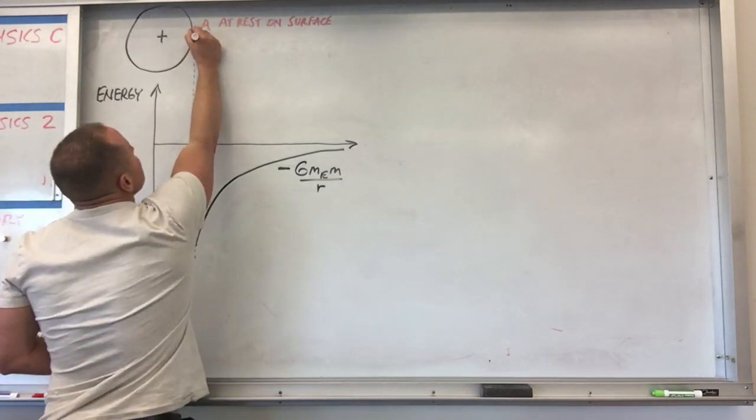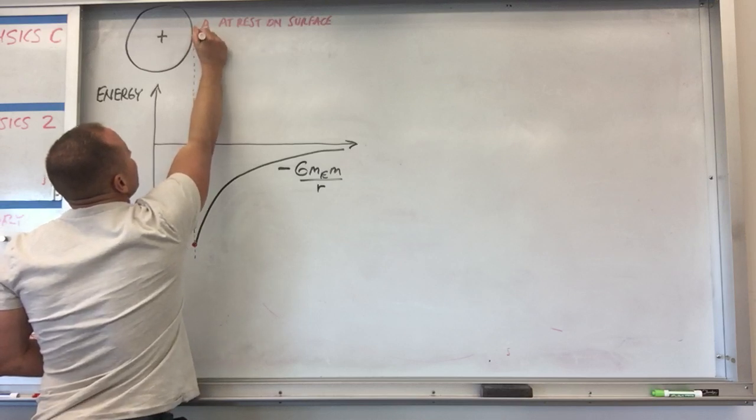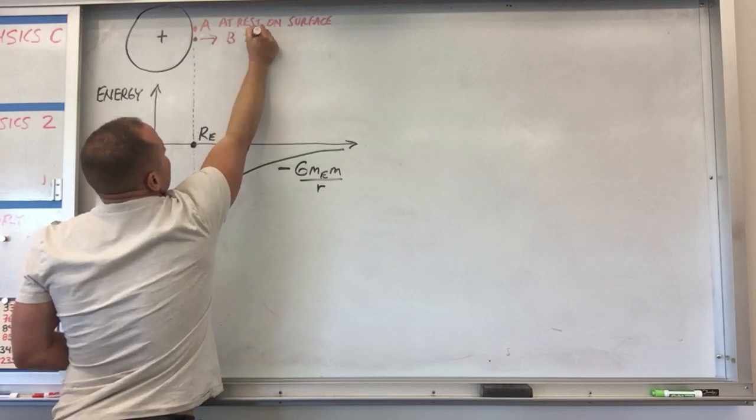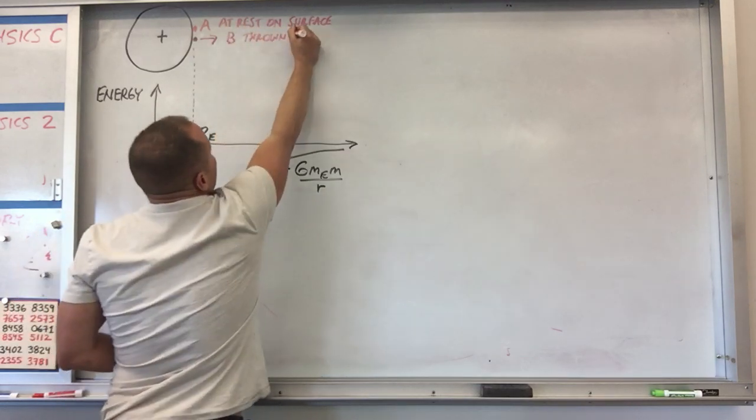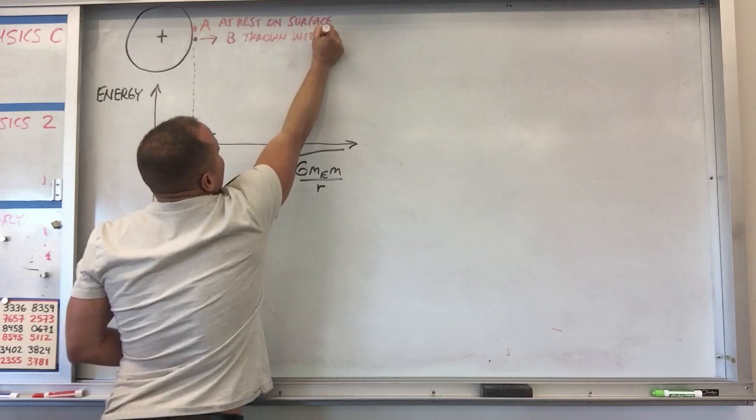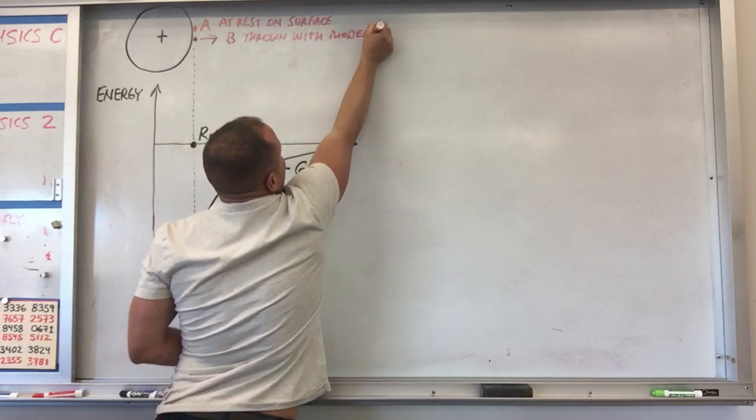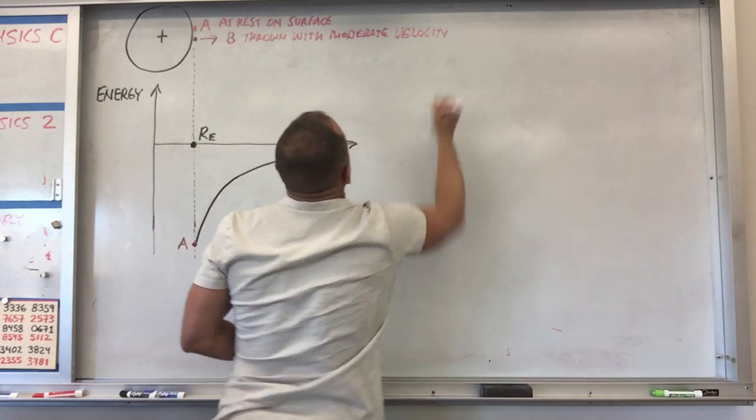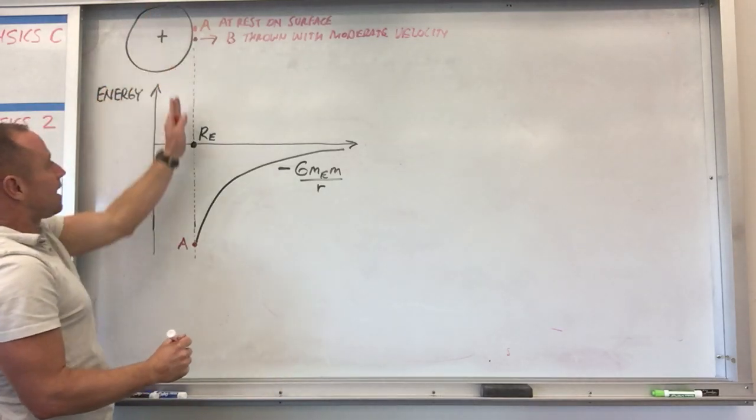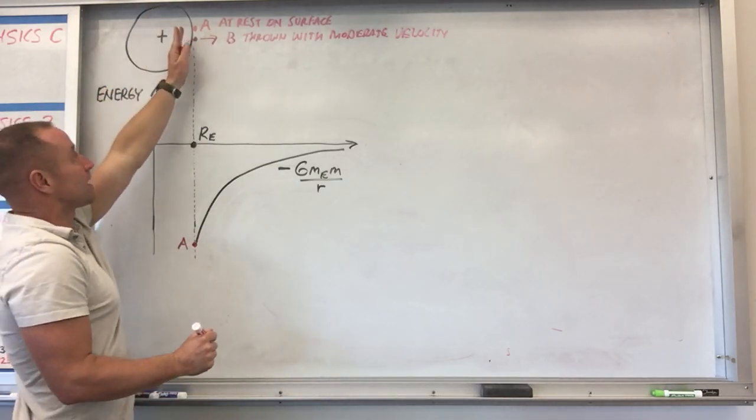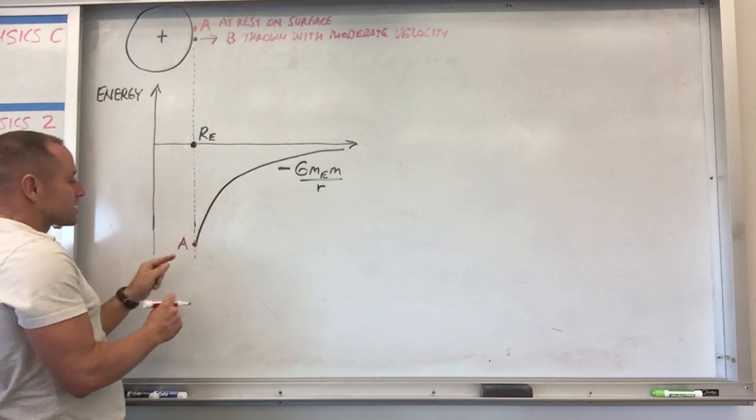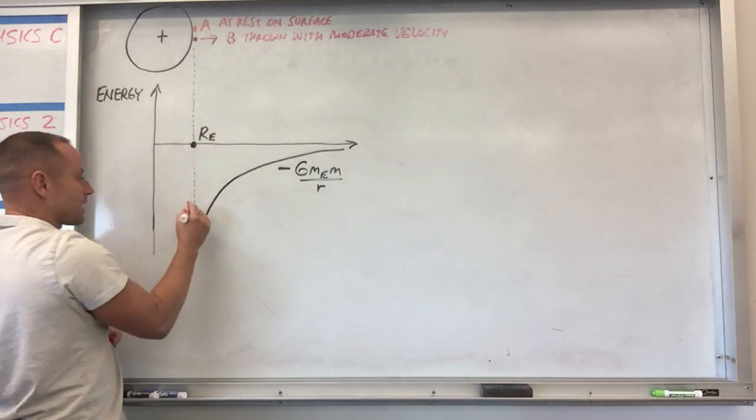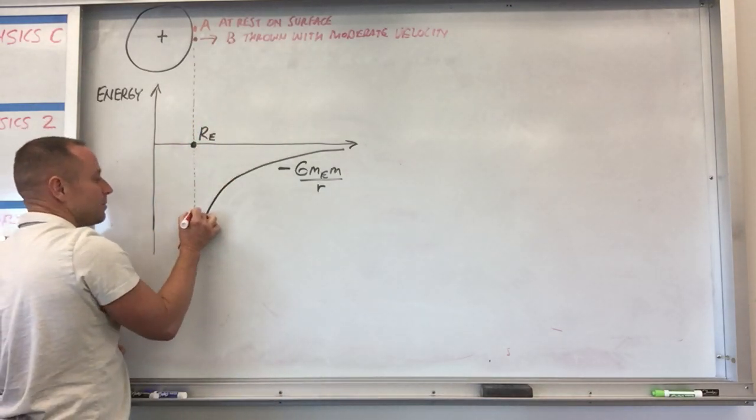Object B is going to be thrown up into the air with some kind of moderate velocity. Well, what that means is object B is also at the radius of the Earth, that's its location, and so it must then have this much potential energy. But the thing is it's moving, so it's also got kinetic energy. So what that means is on the energy ladder it's got to be up a little higher.